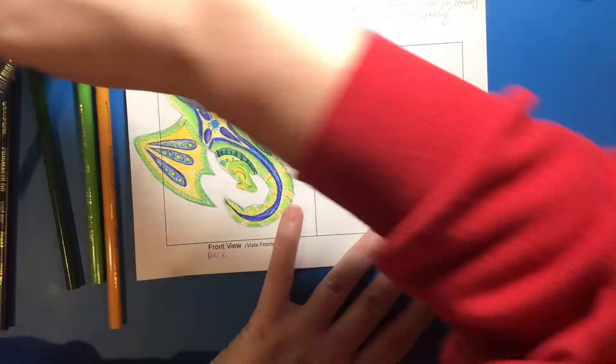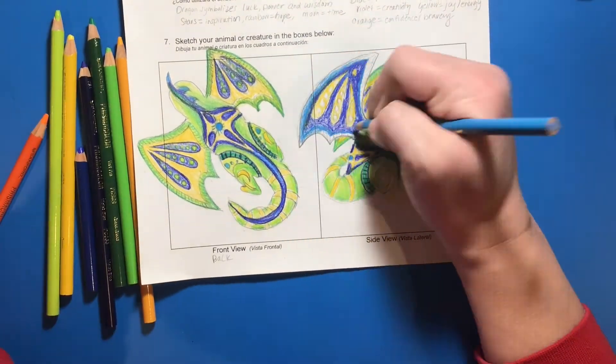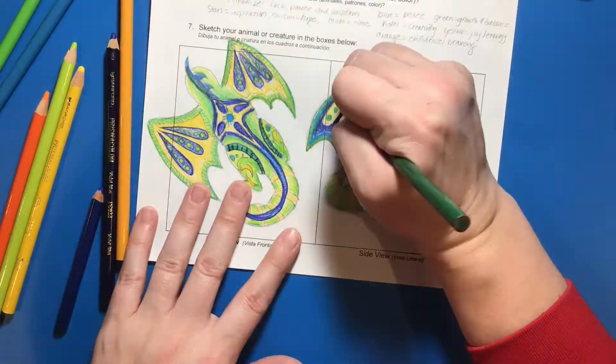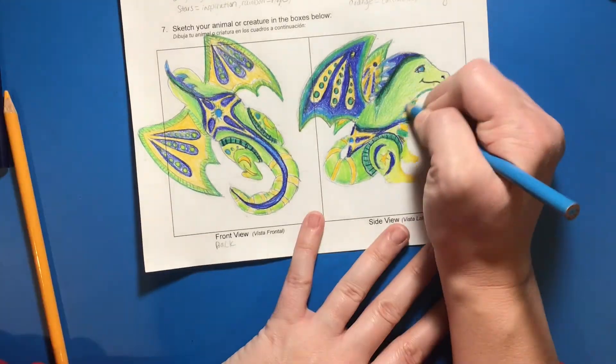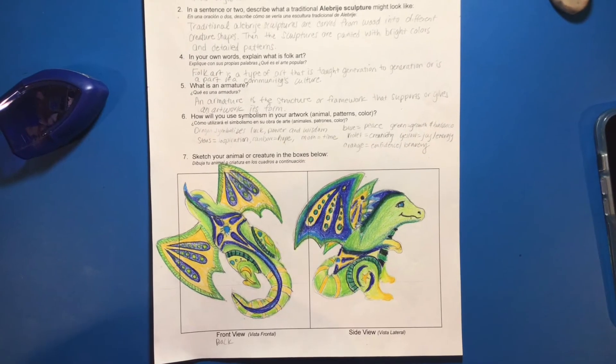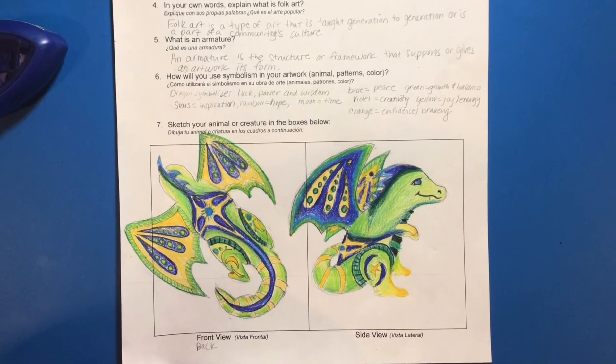And don't forget, one of the requirements is that you repeat your colors throughout your creature as well. And also that you have your designs and patterns added to all sides to add interest. If you have any questions during the brainstorming process, please let me know.